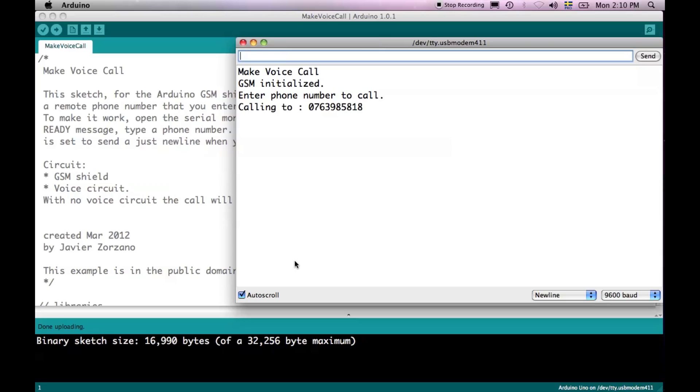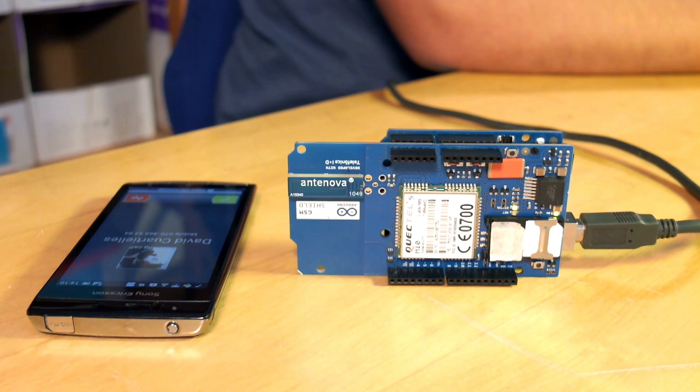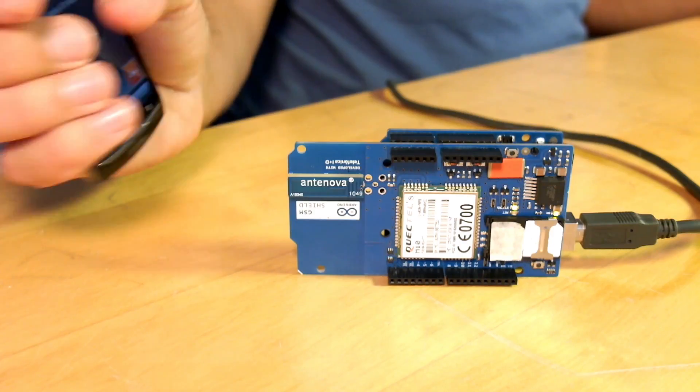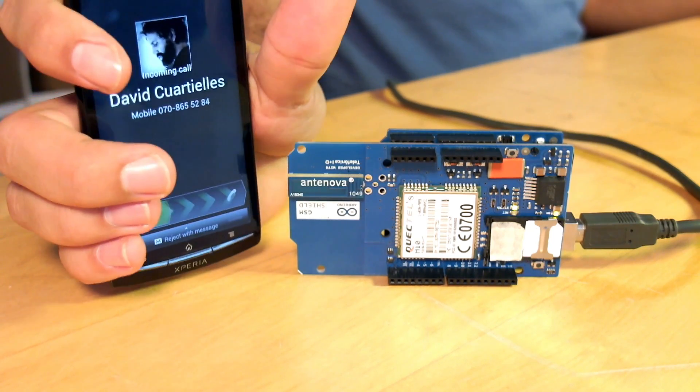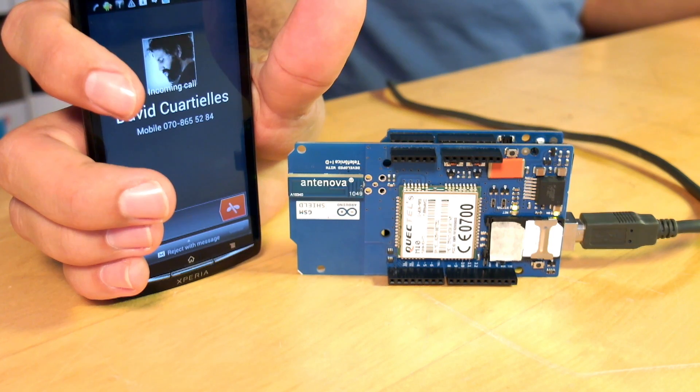Let's press send, and this will be setting up a call to the shield. So as you see, right now, I'm calling from my shield to my phone.